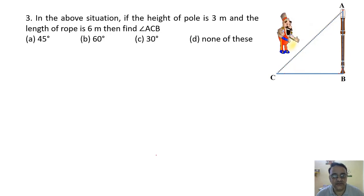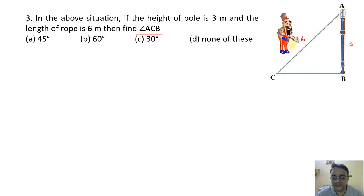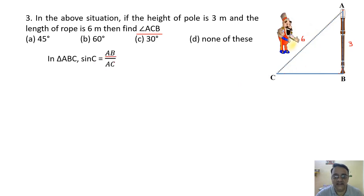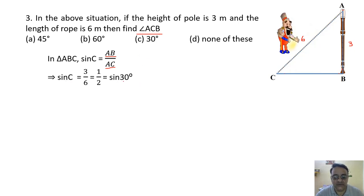Question 3: If the height of the pole is 3 meter and the rope is 6 meter, find angle ACB. Opposite and hypotenuse are given, so we use sin: sin C = AB/AC = 3/6 = 1/2. Since sin 30° = 1/2, angle C = 30 degrees. The correct option is option C.